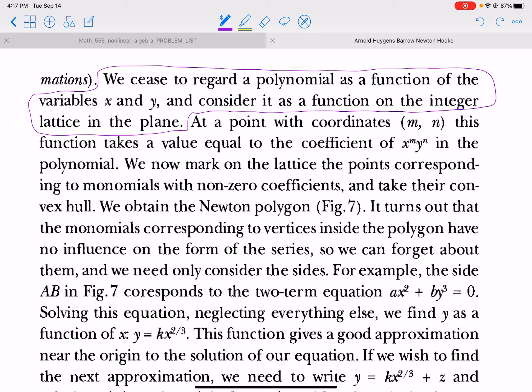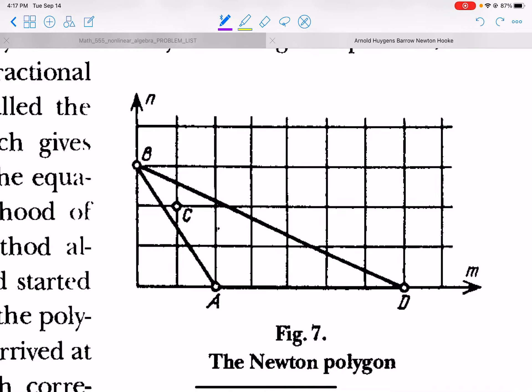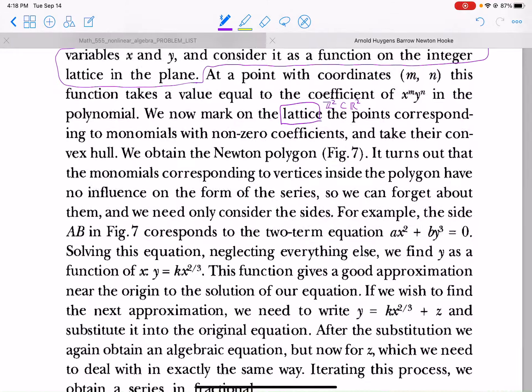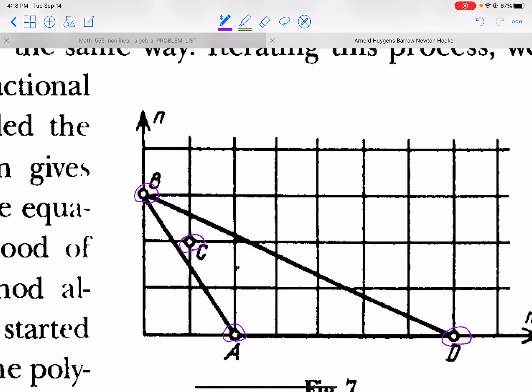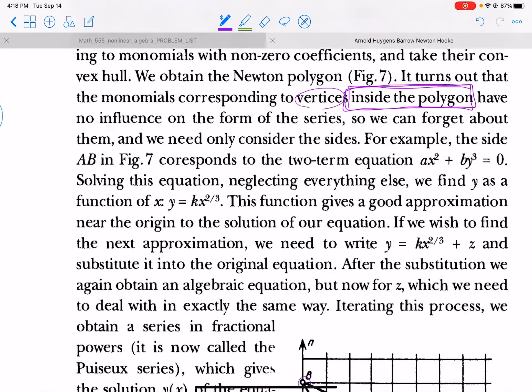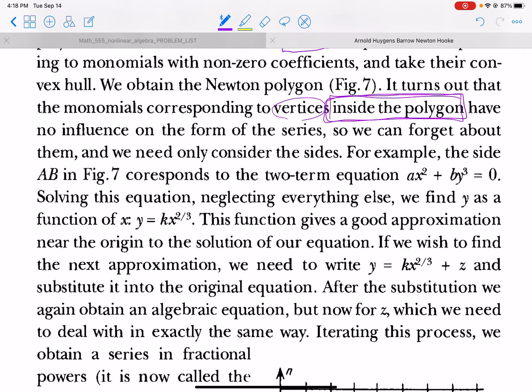So there's where the coefficient of this monomial comes in. It's the value of the function. We now mark on the lattice, a lattice in this case is like Z^2 inside of R^2, we now mark on the lattice the points corresponding to monomials with non-zero coefficients and take their convex hull. We obtain the Newton polygon, Figure 7. This is it.